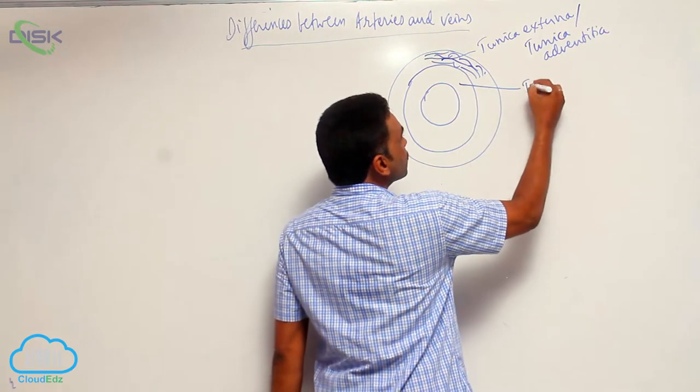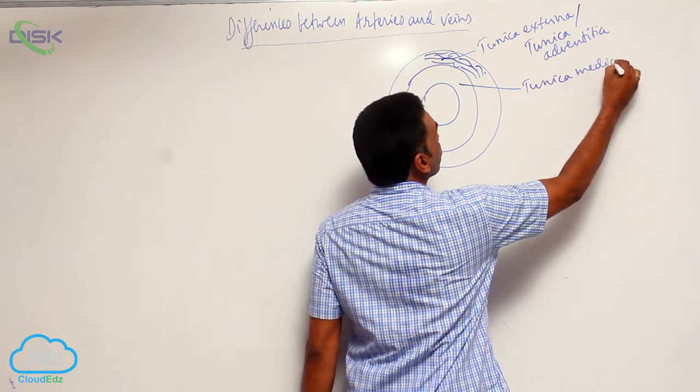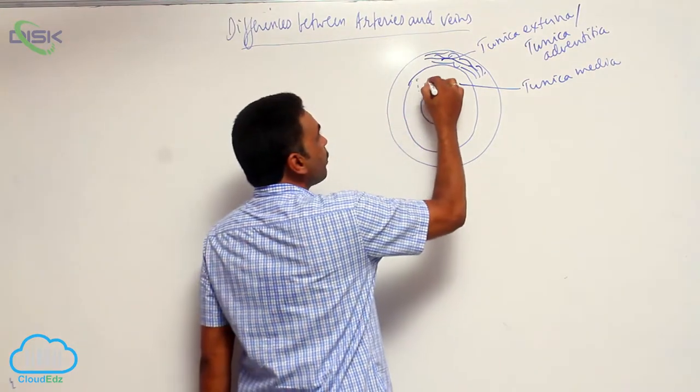The second layer is tunica media. It is made up of smooth muscles.